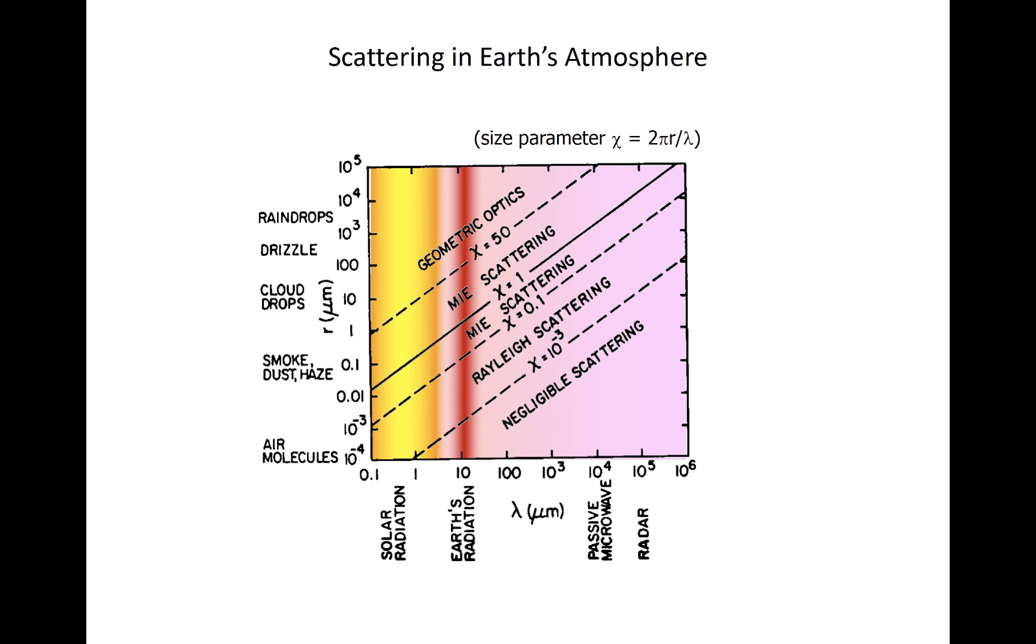Blue light is also more efficiently scattered than longer wavelength red light, which largely explains why the sky appears blue.